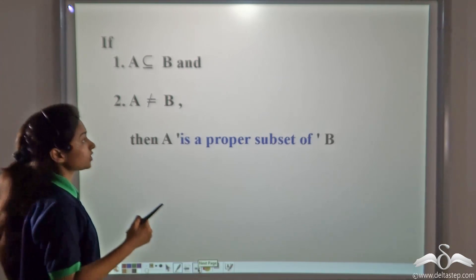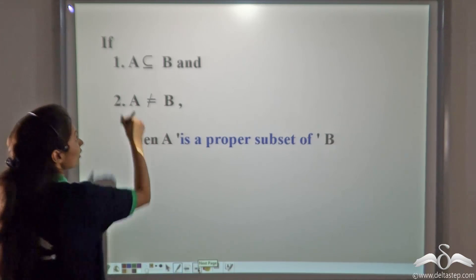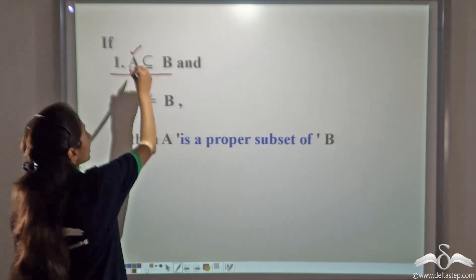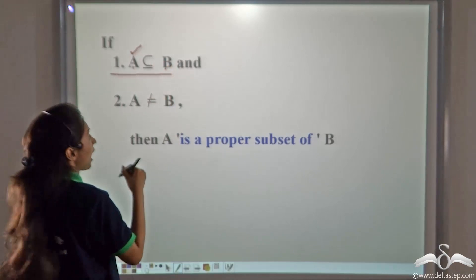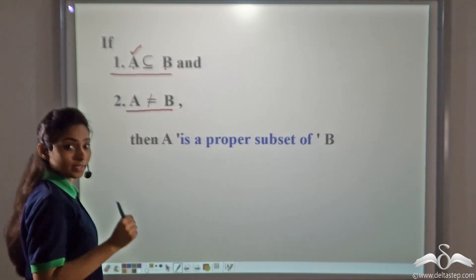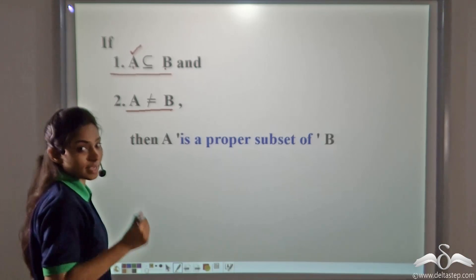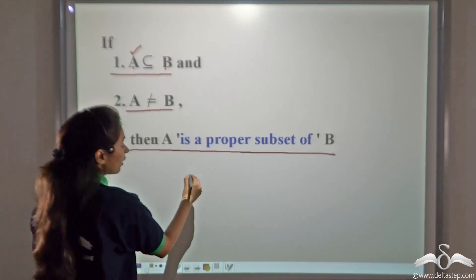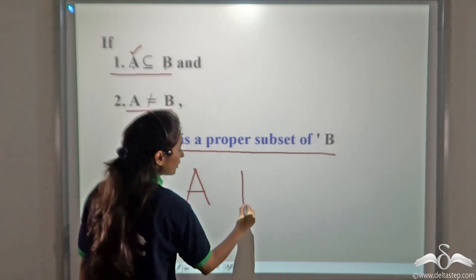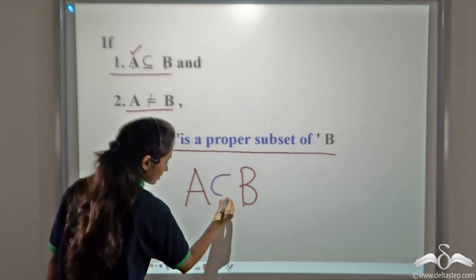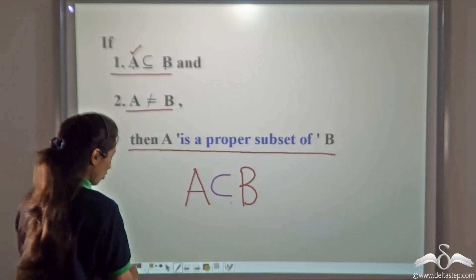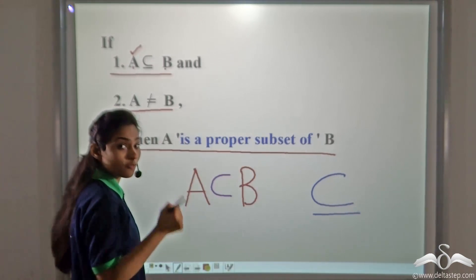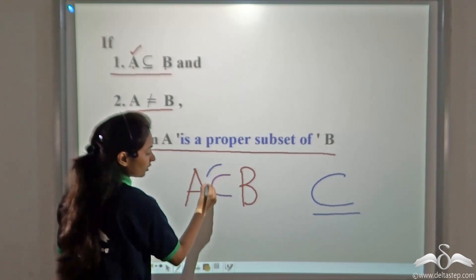What are the two conditions we check to see whether a set is a proper subset? First, it should be a subset of B — if A is a set and it wants to be a proper subset of B, it must be a subset of B. Second, it should not be equal to B — the proper subset should not be equal to the main set. Then A will be the proper subset of B. The symbol for a proper subset is like the subset symbol but without the underline.